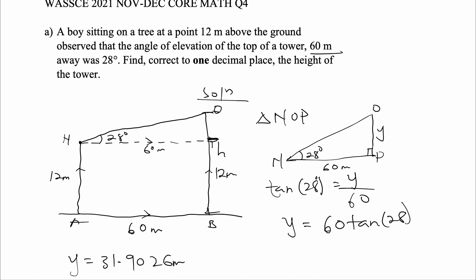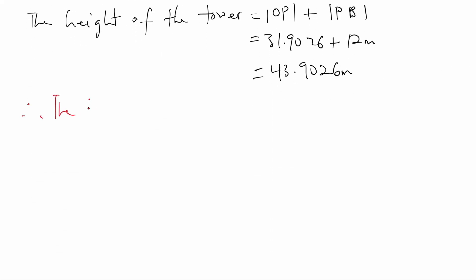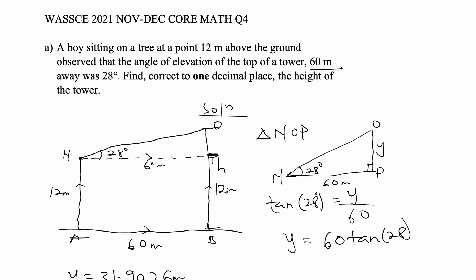So the height of the tower will be 31.9026 plus 12 meters, which equals 43.9026 meters. But we have been asked to leave our answer to one decimal place. Therefore, the height of the tower is 43.9 meters. This brings us to the end of question 4a. Don't forget to like and subscribe, and leave your questions in the comment section. We'll now move on to question 4b.